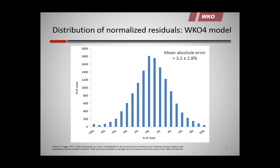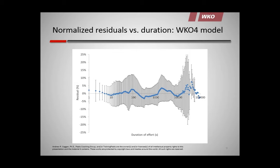I've been stress-testing this model for three years and it has passed every test I can give it. We need to define the three parameters being reported. First, Pmax — the maximal power you can generate for a short period, an expression of neuromuscular power. Second, Functional Reserve Capacity (FRC) — the total amount of work that can be done during continuous exercise above FTP before fatigue ensues. Third, Functional Threshold Power (FTP) — which has been around for over a decade — essentially the functional expression of your metabolic control limit in terms of power output.